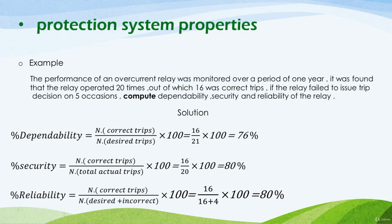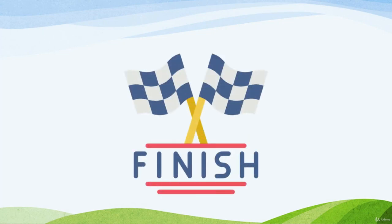From these results we conclude that when the number of correct trips increases, the device is a dependable one, while when the total number of trips decreases, the device is a secure one, as it trips the circuit fewer times. That's all for this tutorial, where we explained the first three properties of the protection system. Thank you for watching and see you in the next tutorials.